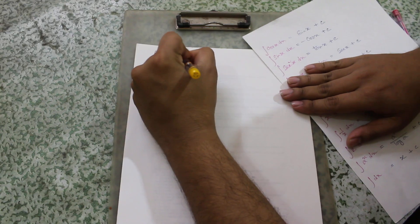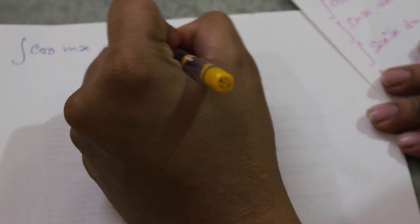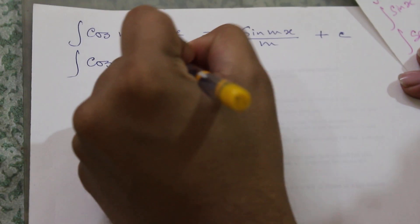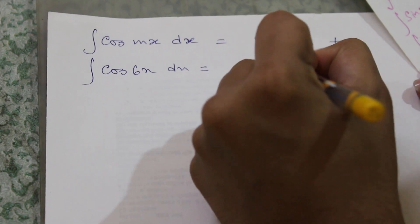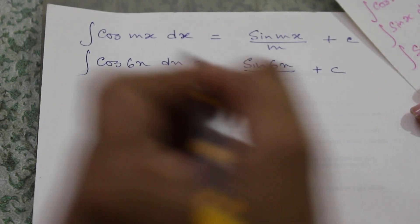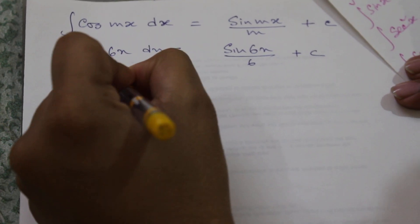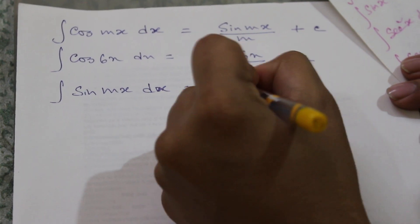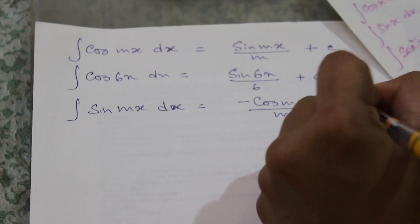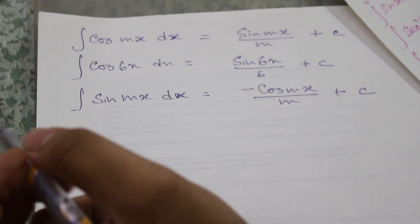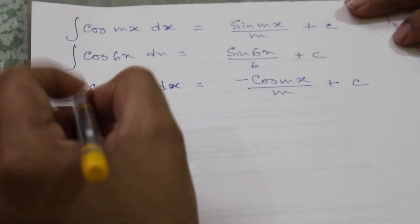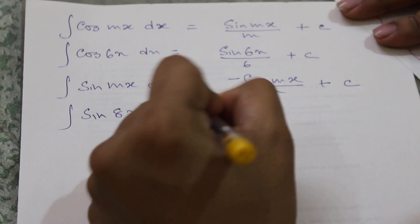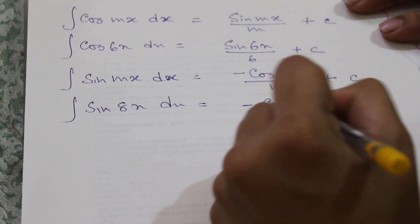Now applying these formulas to multiple angle cases: if we integrate cos mx instead of cos x, we get sin mx divided by m, plus c. For example, integrating cos 6x gives sin 6x divided by 6, plus c. For sin mx dx, we get negative cos mx divided by m, plus c. For example, integrating sin 8x gives negative cos 8x divided by 8, plus c.